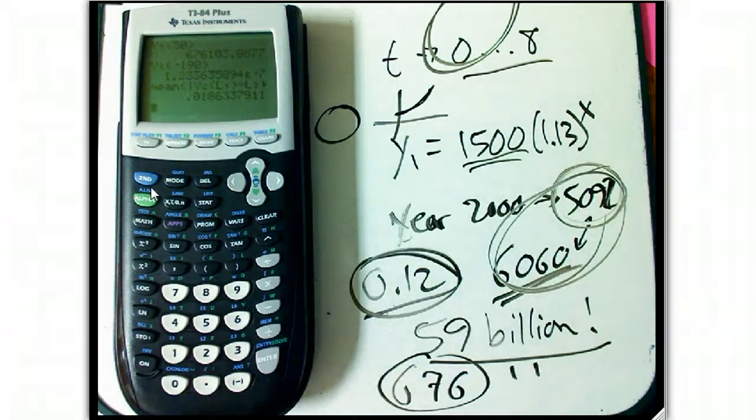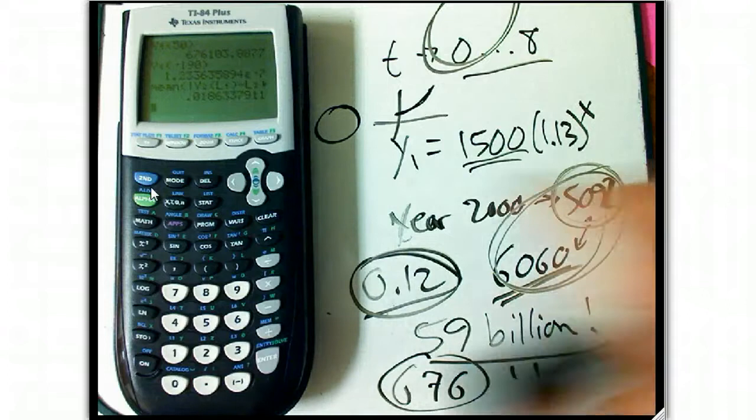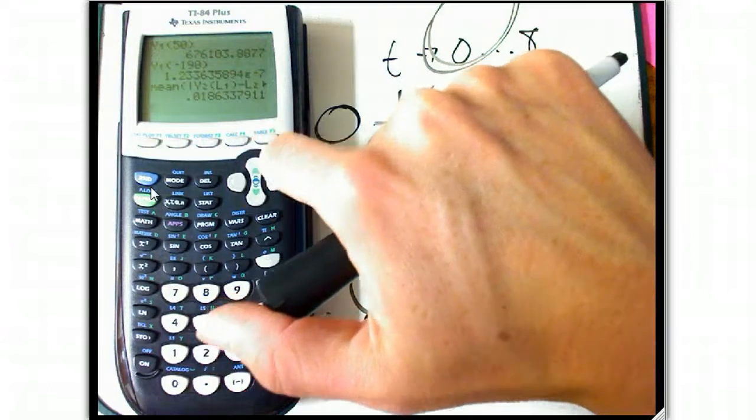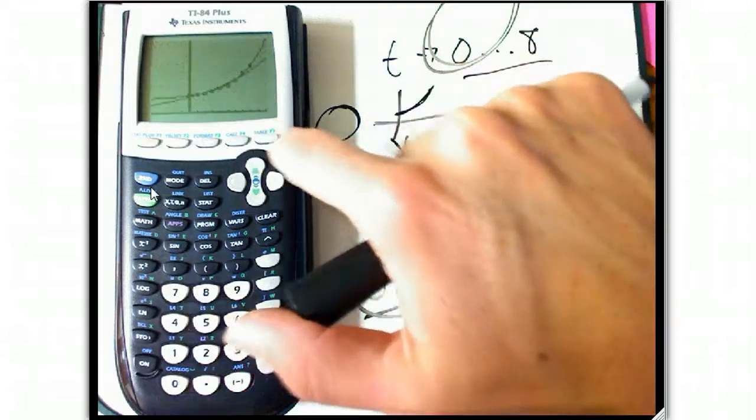Now here I've got one already in second entry with Y2. I'll just do enter. 1.9%. Definitely much, much better.